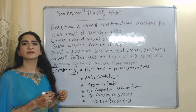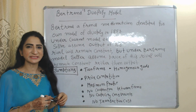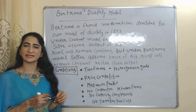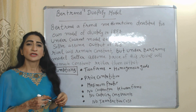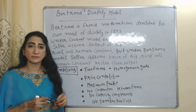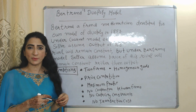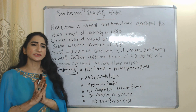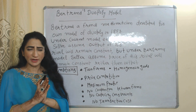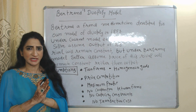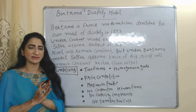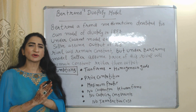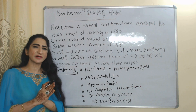Hello everyone, my name is Minis Ethi. I hope you all are staying healthy. Today we are going to talk about the Bertrand Duopoly Model. This model was given by French mathematician Bertrand in 1883.